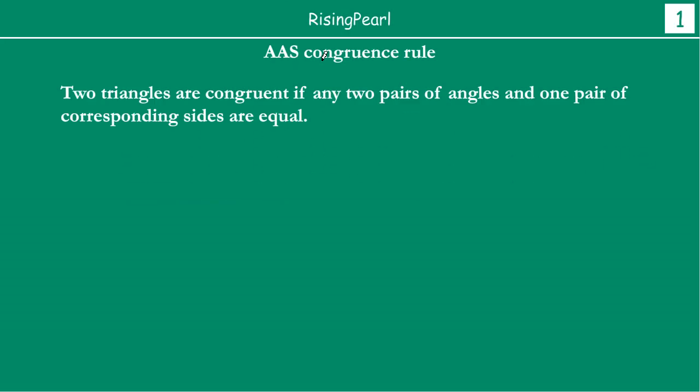Now the AAS or Angle-Angle-Side congruence rule states that two triangles are congruent if any two pairs of angles and any one pair of corresponding sides are equal in two triangles. Then we say these two triangles are congruent.